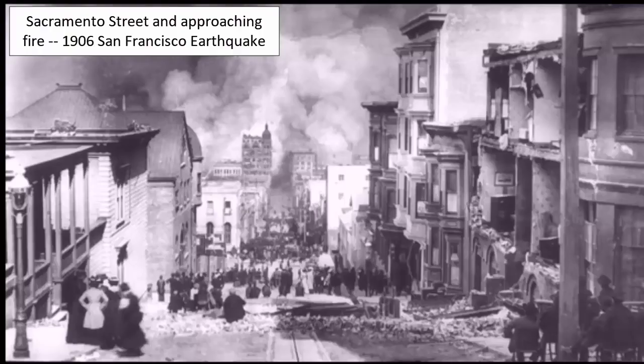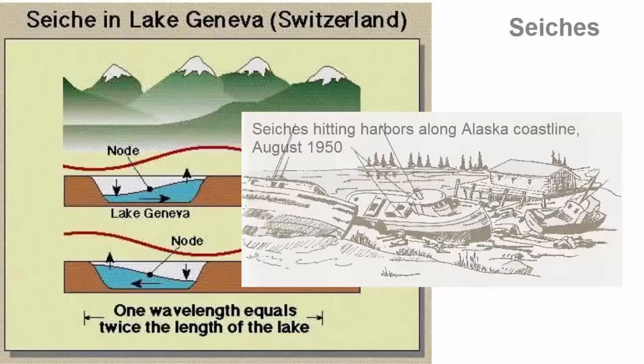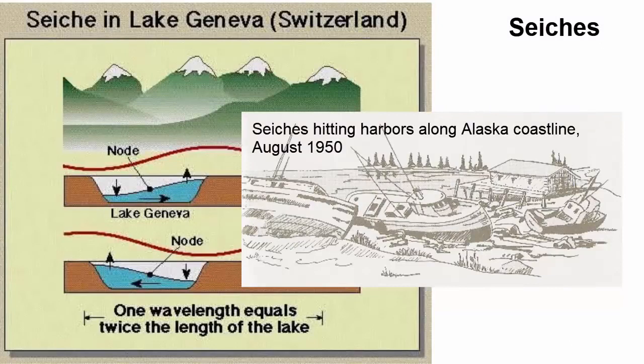Fires spread easily when folks are cooking over open flames and buildings are made of wood. Seiches or large standing waves can form in lakes or pools or lagoons and flood the surrounding land.